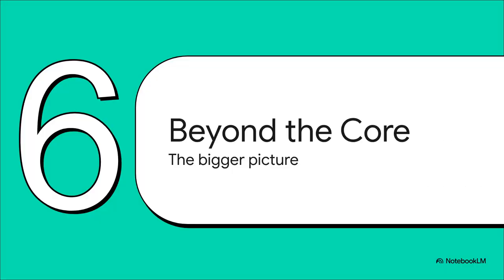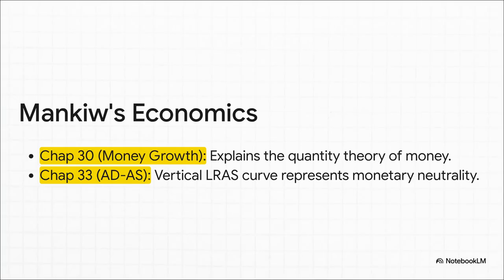We've pretty much nailed this question, so let's zoom out and see how these ideas connect to the bigger picture. For anyone using Mankiw's Principles of Economics, you'll want to head straight to Chapters 30 and 33. When you get to Chapter 33 and see that famous vertical long-run aggregate supply curve, that graph is a perfect visual representation of monetary neutrality — it's literally showing you that in the long run, output is determined by real factors, and the price level can't touch it.